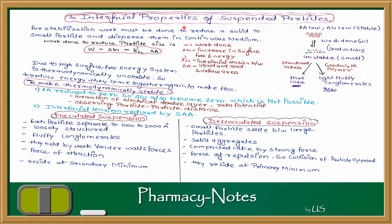According to particle size and properties, suspension is divided into flocculated and deflocculated. If we talk about any suspension that is stable, the suspended particles are evenly and continuously distributed in the dispersion medium. For stabilization, work must be done to reduce the solid to small particles and disperse them in the continuous phase.